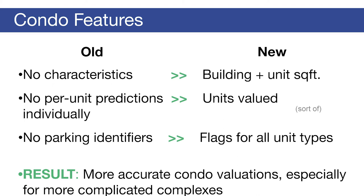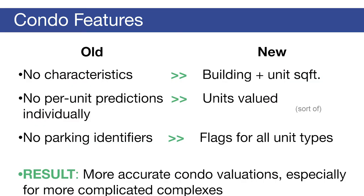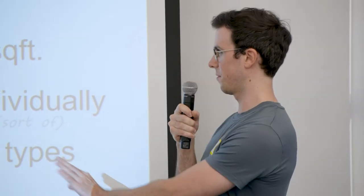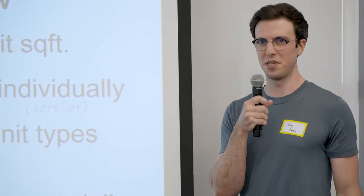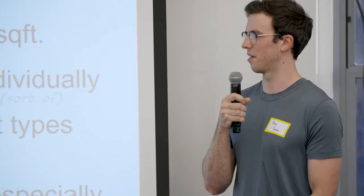Condo features. The condo model is quite different from the residential model. You may be surprised to learn that if you own a condo, we know absolutely nothing about your unit — we do not know the square footage, we do not know how many bedrooms it has. That is because the assessor is not allowed to enter buildings, so we can't inspect your condo unit. This obviously poses a challenge for modeling because we just don't have many characteristics to model on. That has somewhat changed this year — we have added building and unit square footage to the majority of properties in the North Triad, which is a big improvement. The takeaway is that the condo model is more accurate than it has ever been.